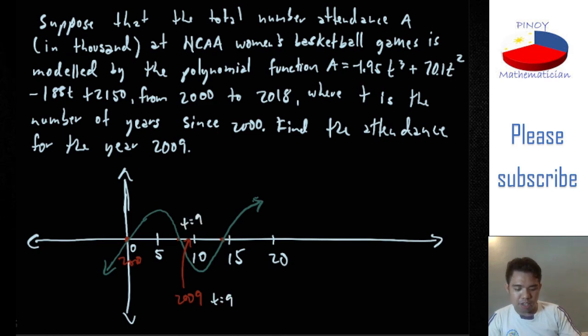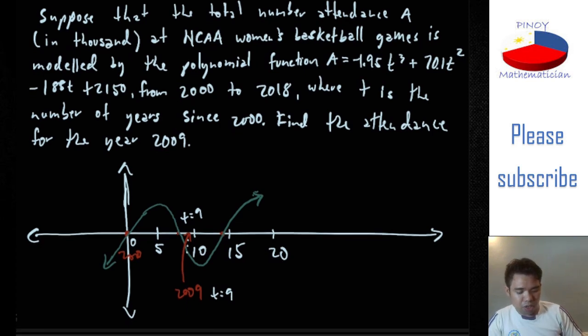So T equals 9, and we're going to solve for that. But, so, as I said, since it's just an estimation of the graph, so we don't know if it's negative, I believe that's going to be possible for it to have a negative value for the attendance. So let's solve it.